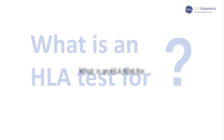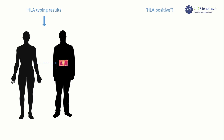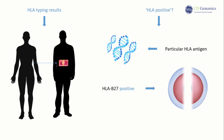Now let's explore the purpose and significance of HLA testing. HLA typing results can be used for organ and tissue transplantation to carefully match donors and recipients, reducing the risk of rejection. Being HLA positive for a specific HLA type indicates the presence of a particular HLA antigen in your genetic profile. For example, if someone tests positive for HLA-B27, it means they have the HLA-B27 antigen in their cells. This is crucial for understanding disease associations, as positivity for certain HLA types may indicate a higher risk of developing specific autoimmune disorders.